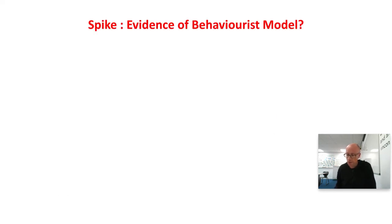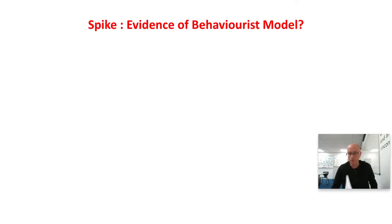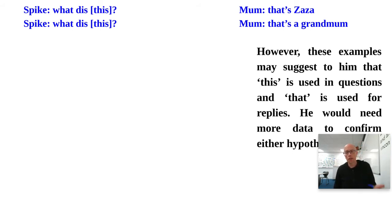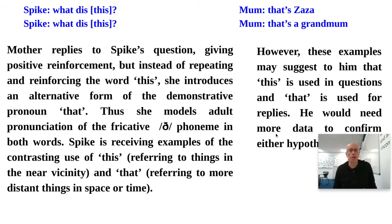Now go to page 15 in your CLD booklets, where you'll find a transcript involving a two-year-old called Spike, who is looking at a picture book about Zaza and her giraffe family with his mum and dad. He's saying things like 'what dis?' and mum says 'that's Zaza.' On pages 15 and 16 you need to deconstruct the language to see what evidence there is for and against the behaviorist approach.